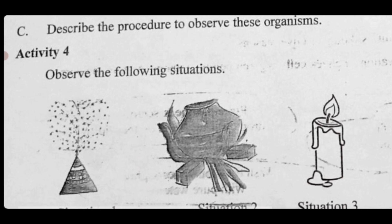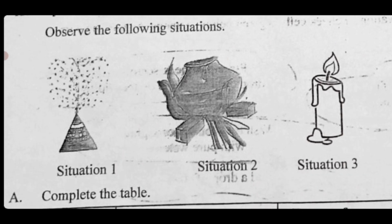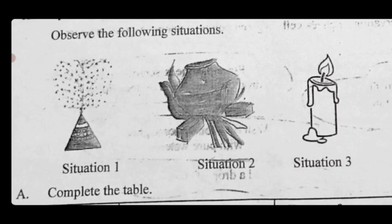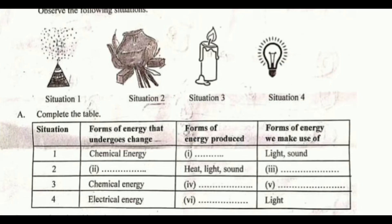Activity Four: observe the following situations. Situation one involves a filter. What kind of energy change takes place? The energy produced is heat. Situation two: what is the energy change? That is chemical energy. What is the energy produced? Heat, light, and sound — we use heat. So the answer is heat.